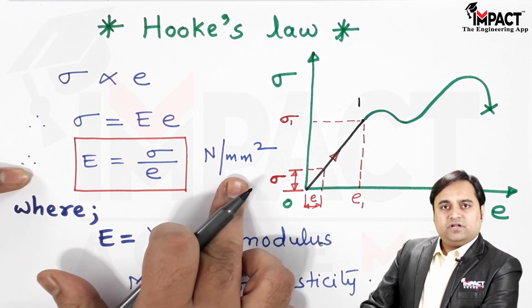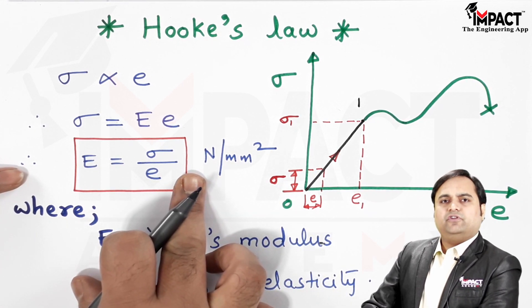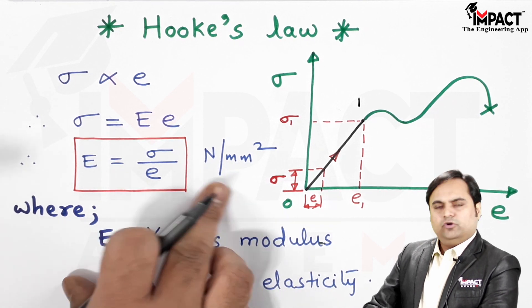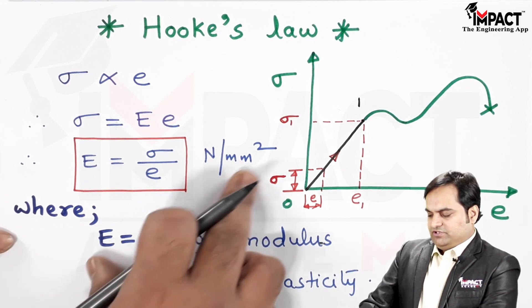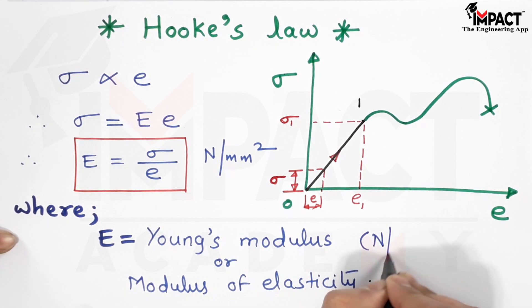This unit also depends upon the force and the area. For example, if the force is in kilonewton and area in centimeter square, then it would be kilonewton per centimeter square. The SI unit is Newton per mm², same as the unit of the modulus of elasticity.